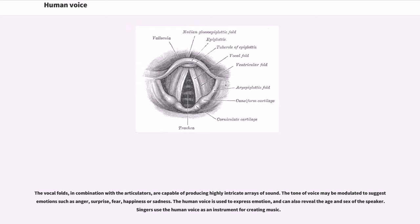The vocal folds, in combination with the articulators, are capable of producing highly intricate arrays of sound. The tone of voice may be modulated to suggest emotions such as anger, surprise, fear, happiness, or sadness. The human voice is used to express emotion and can also reveal the age and sex of the speaker. Singers use the human voice as an instrument for creating music.